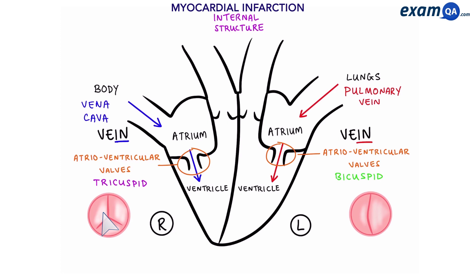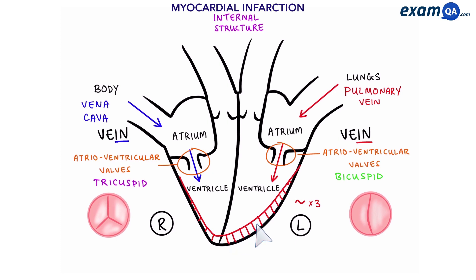The next chambers are called ventricles. The ventricles are much larger than the atria and have more muscle around them. However, the left ventricle has even more muscle compared to the right ventricle. This is because the left ventricle pumps blood to the whole body, whereas the right ventricle only pumps to the lungs, which is quite close to the heart.